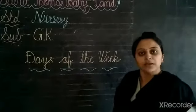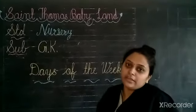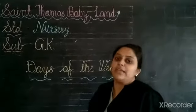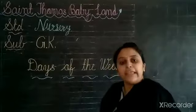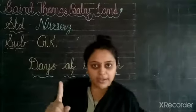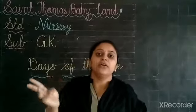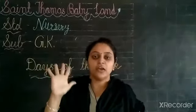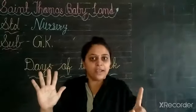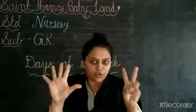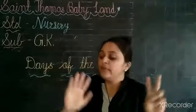Days of the week. You know, children, how many days in a week? How many days? Seven days. So the names are Sunday, Monday, Tuesday, Wednesday, Thursday, Friday, and Saturday. How many days? Seven days. We will repeat this concept five times today.